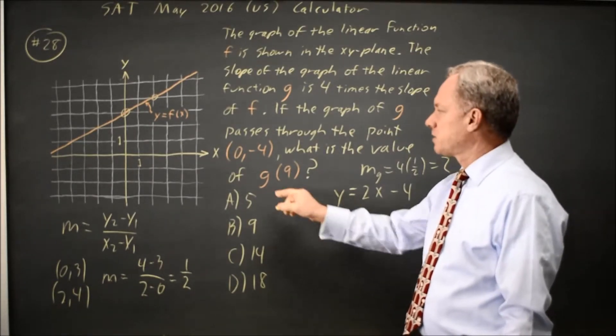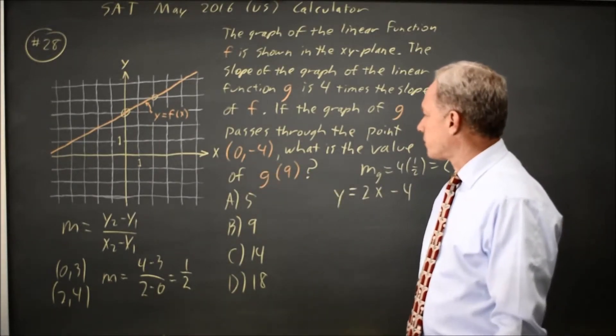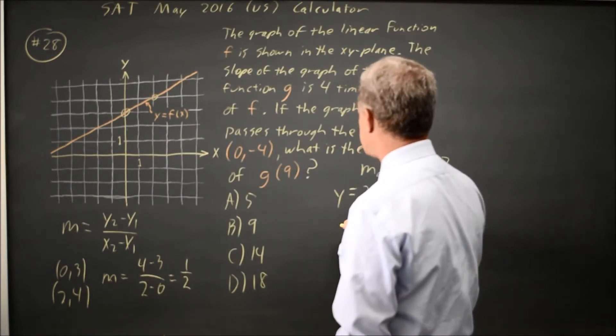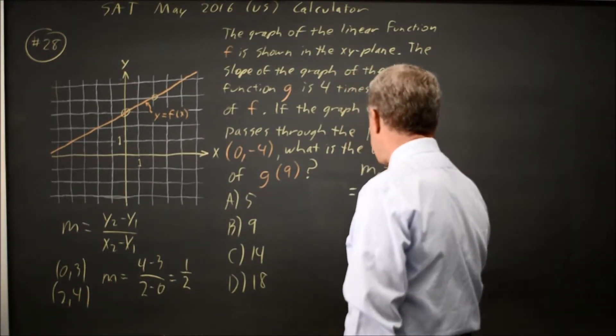It passes through (0, -4). And they're asking what is g of 9. Let's write this as g(x).